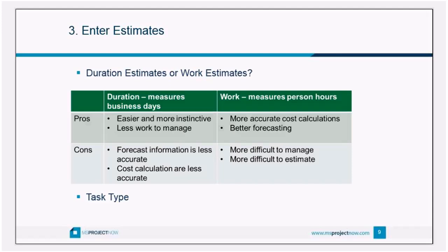Most organizations I've worked with estimate in duration — how many business days will it take — because the most important information they need is when will the project finish and is it going to finish on time. When you choose how you're going to estimate, that's when you know what task type to set. You can use fixed units, fixed work, or fixed duration. If you're making duration estimates, set the task type to fixed duration; for work estimates, set it to fixed work.